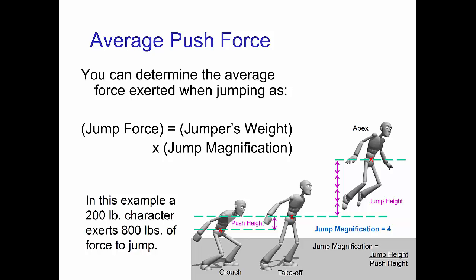The average amount of force you exert on the ground is your weight times the jump magnification. Just to remind you, the jump magnification is the ratio of how high you jump to how far you push from crouch to takeoff. In this example, the jump magnification is four since the character jumps four times higher than the push.